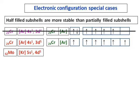The element below chromium is molybdenum, and the same rule applies: half-filled subshells are more stable. Molybdenum has the configuration [Kr] 5s1 4d5. Tungsten is further below, but it is so far from the nucleus that this rule has less impact, so it is generally applied mainly to chromium and molybdenum.